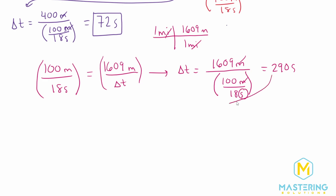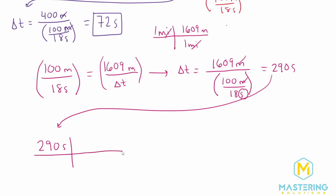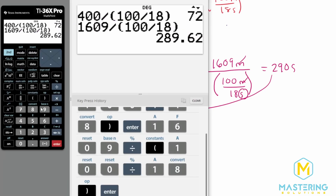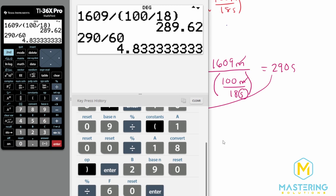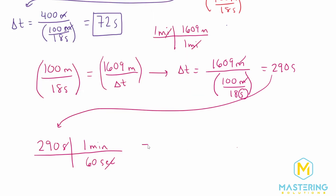We have 290 seconds, and we need to put that into minutes because that's how Mastering Physics wants it. We know in one minute there are 60 seconds, so the seconds will cancel. We take 290 divided by 60, and we get 4.83 — we'll keep that at 4.8 minutes. So that is how long it would take her to run a mile at that same speed, which is pretty quick.